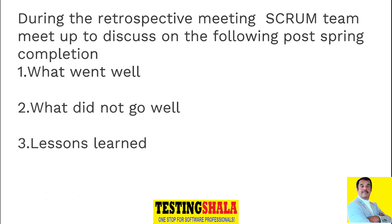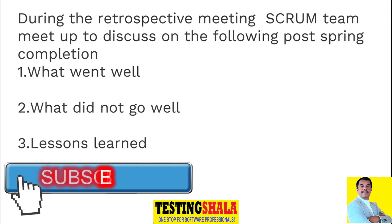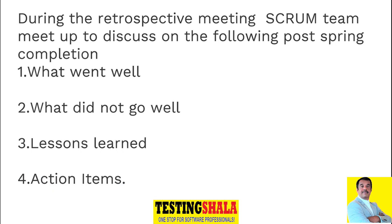As part of what went well and what did not go well, we will be documenting all the lessons learned as part of this journey in the overall Sprint cycle, whether it is a two-week or three-week Sprint. How can we mitigate these issues in the future and how can we resolve the not-so-well items — action items will be assigned to the respective Scrum Team members so that we can improve in the coming Sprint. These are the four things we normally discuss as part of the retrospective meeting.